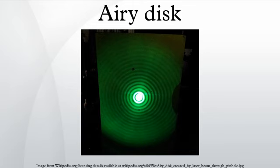The disc and rings phenomenon had been known prior to Airy. John Herschel described the appearance of a bright star seen through a telescope under high magnification for an 1828 article on light for the Encyclopedia Metropolitana: the star is seen as a perfectly round, well-defined planetary disc, surrounded by two, three, or more alternately dark and bright rings, which if examined attentively are seen to be slightly colored at their borders. They succeed each other nearly at equal intervals round the central disc. However, Airy wrote the first full theoretical treatment explaining the phenomenon.